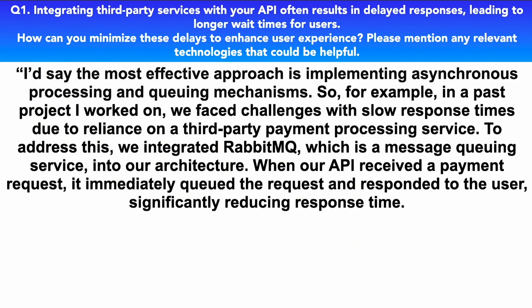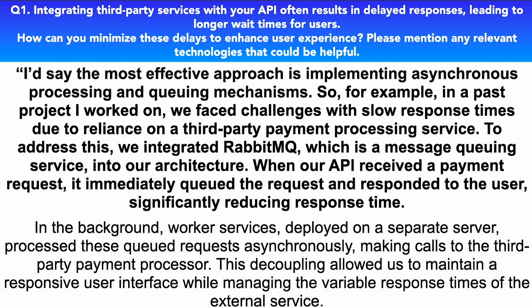The most effective approach is implementing asynchronous processing and queuing mechanisms. In a past project, we faced challenges with slow response times due to reliance on a third-party payment processing service. To address this, we integrated RabbitMQ, which is a message queuing service, into our architecture. When our API received a payment request, it immediately queued the request and responded to the user, significantly reducing response time. In the background, worker services deployed on a separate server processed these queued requests asynchronously, making calls to the third-party payment processor. This decoupling allowed us to maintain a responsive user interface while managing the variable response times of the external service.